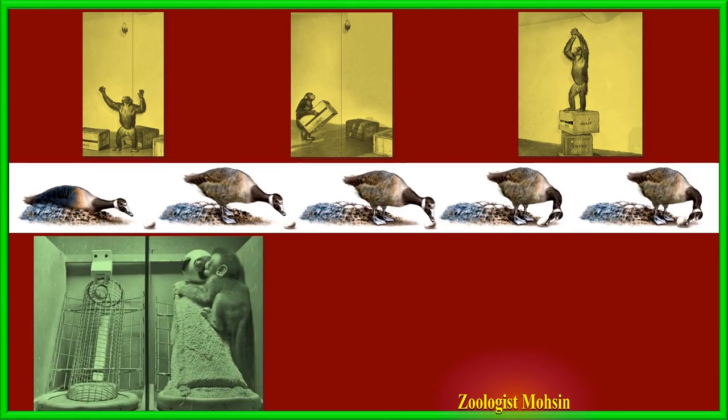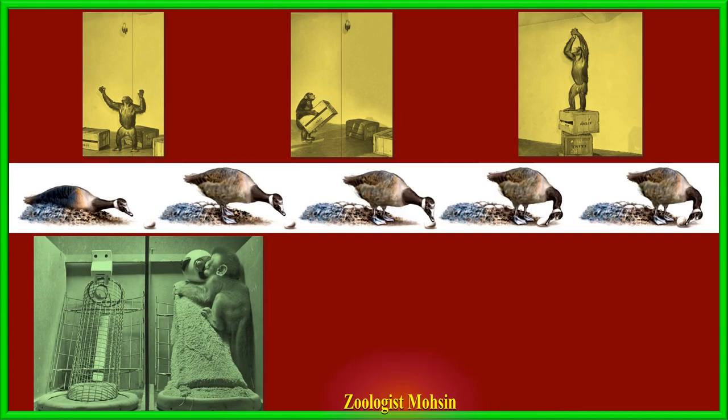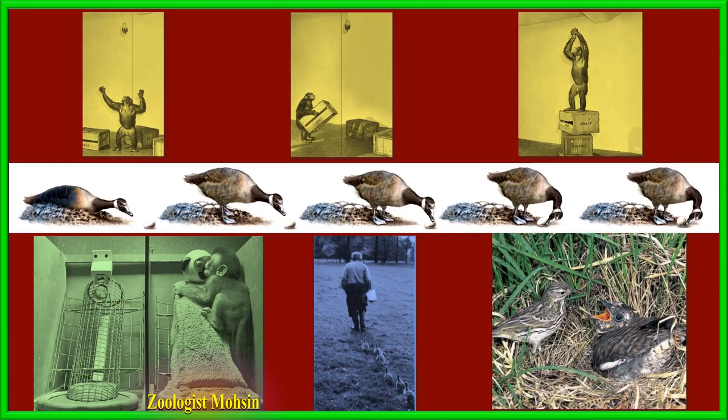A monkey whose mother had died was given two choices: one box with food and another box with a monkey-like shape and fur cloth. She preferred the monkey-like shape and stayed with it. Young hatchlings start following moving objects they see during the first hours after hatching. Cuckoos don't make nests but occupy the nests of others forcefully and hatch their eggs there.